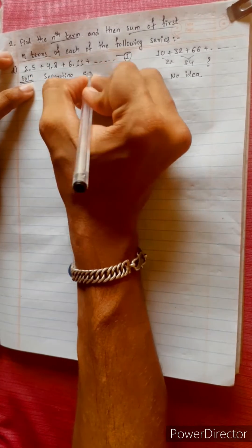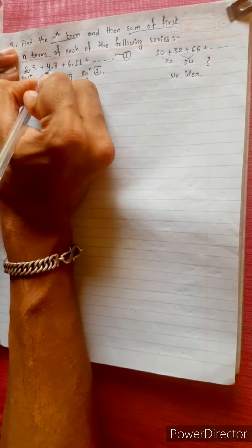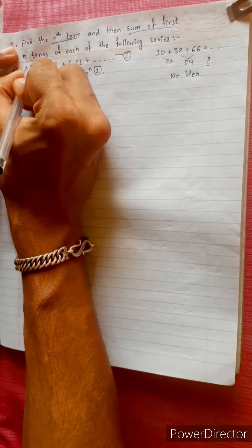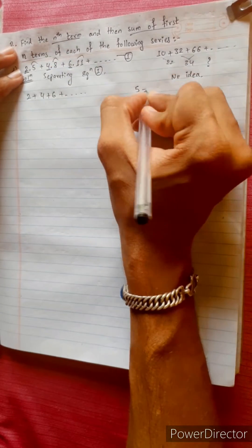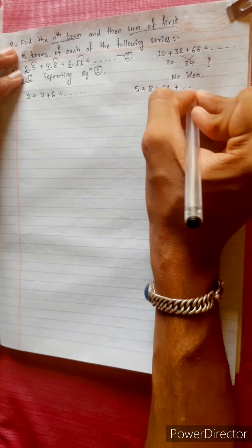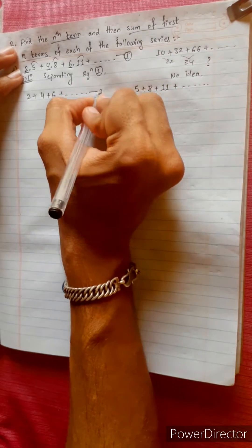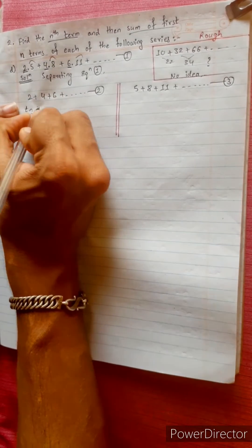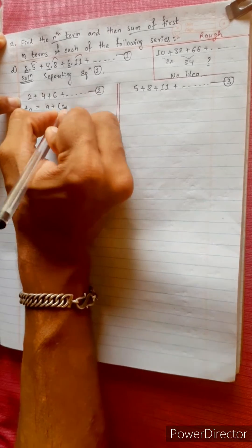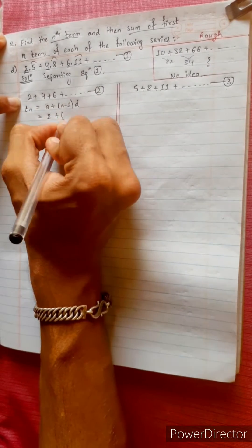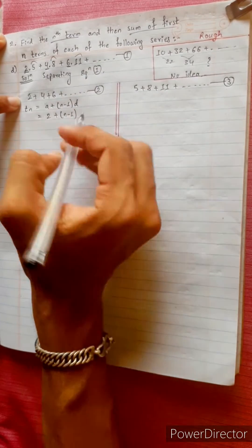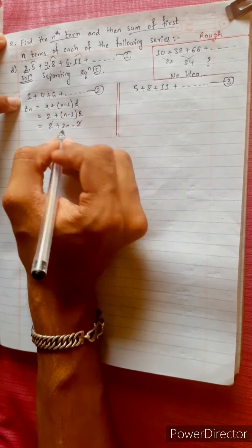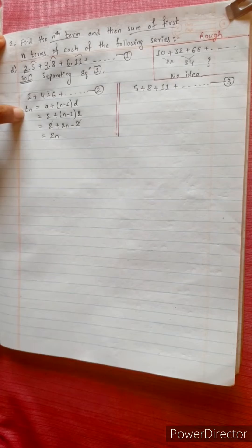Separating equation 1: the first sub-sequence (equation 2) is 2+4+6+... and the second sub-sequence (equation 3) is 5+8+11+... For equation 3, the nth term is tn = a + (n-1)b, so a1 = 2 + (n-1)×2 = 2 + 2n - 2 = 2n. This is the nth term of that sequence.